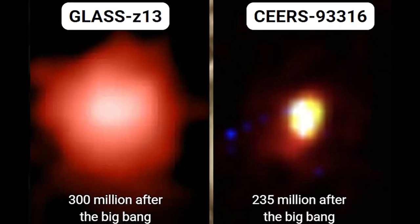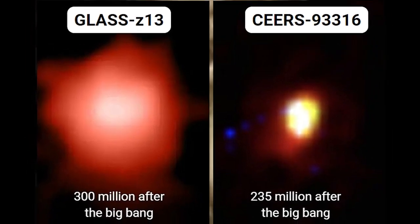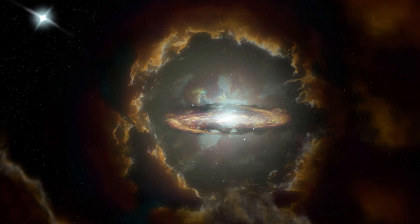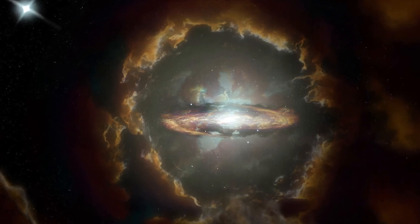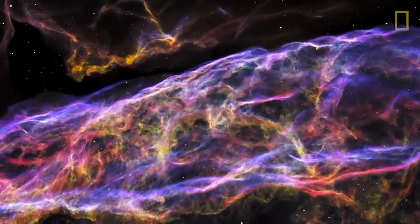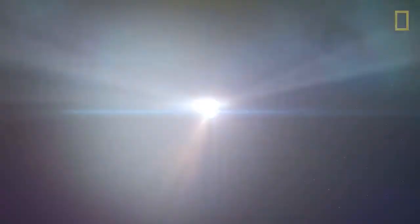The JWST has further broadened our celestial horizon by identifying even older galaxies, such as Glass Z12 and Sears 93316. These ancient galaxies, located in some of the farthest reaches of the observable universe, give insight into the origins of the universe, taking us closer than ever before to the beginning of the cosmos.